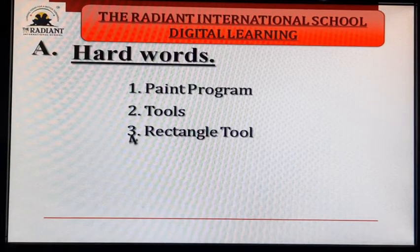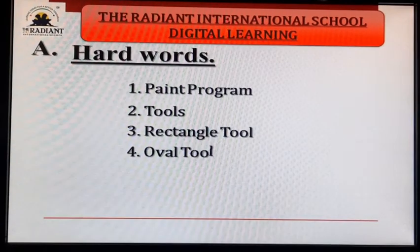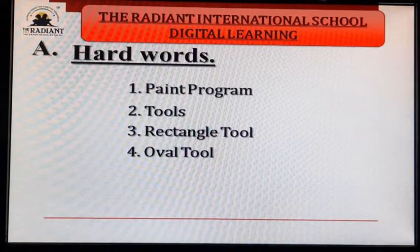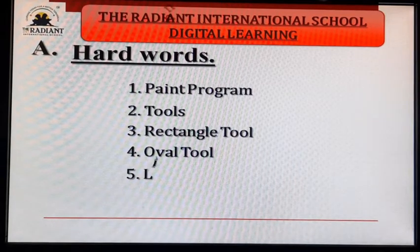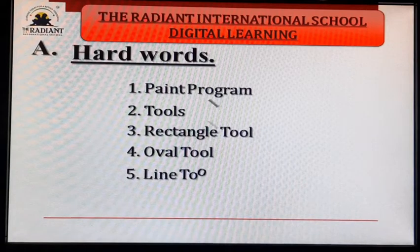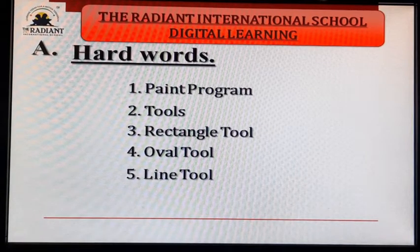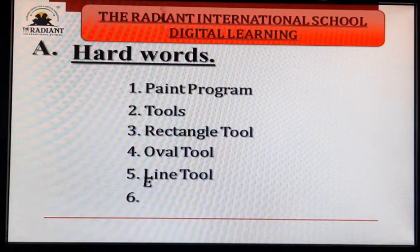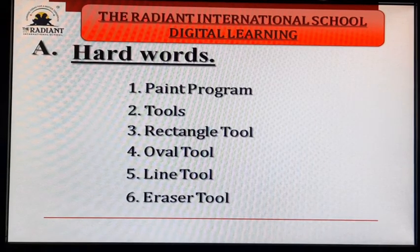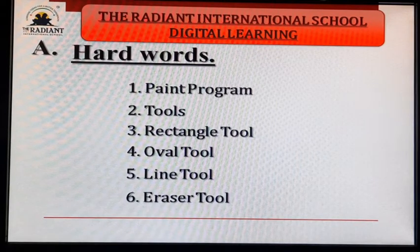Number 4: O-V-A-L — oval. T-O-O-L — oval tool. Number 5: L-I-N-E — line. T-O-O-L — tool. Line tool. Next: E-R-A-S-E-R — eraser. T-O-O-L — tool. Eraser tool.